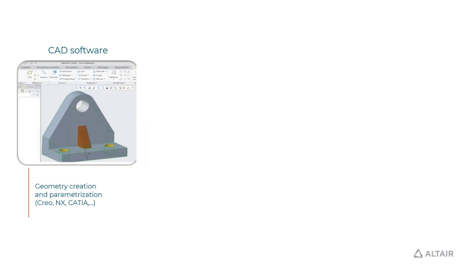The first step, as Siddharth mentioned, is you have to create a geometry and parametrize it in the CAD. Simlab can very well connect to CRIO, NX, and CATIA.